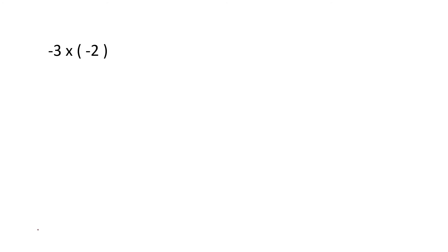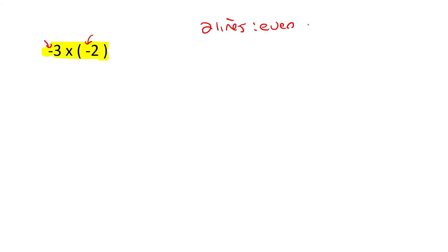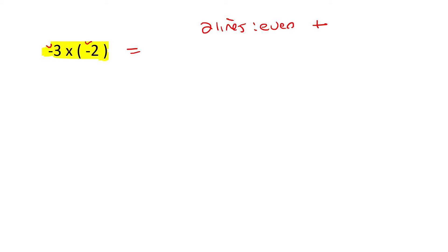Here's our first example. Can you see there is a multiply? So that links those two numbers together. Then just go count all the lines. There's a negative — that's one line. There's a negative — that's two lines. Two is an even number, and even is positive. So this final answer is going to be positive. Now all you need to do is say three multiplied by two — what is three multiplied by two? Six. And the answer will be positive six.